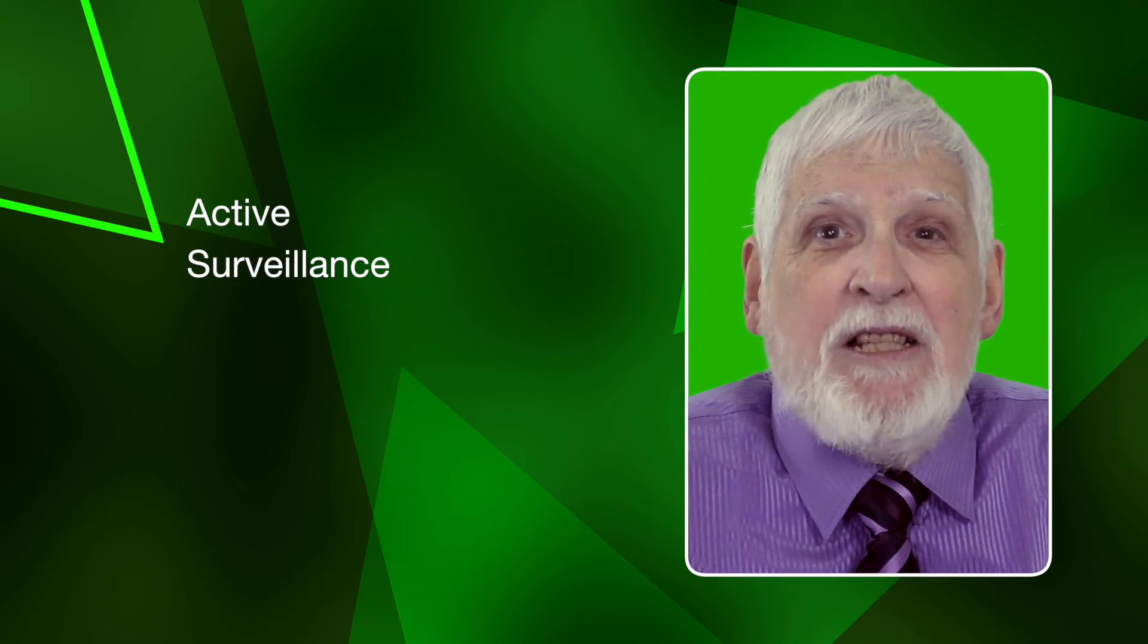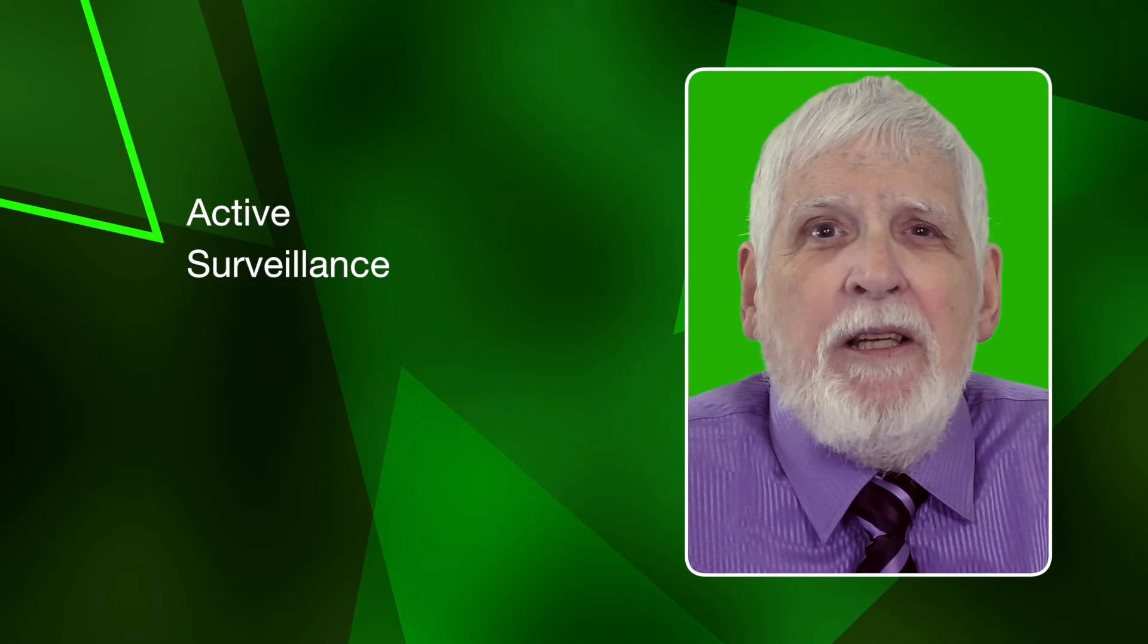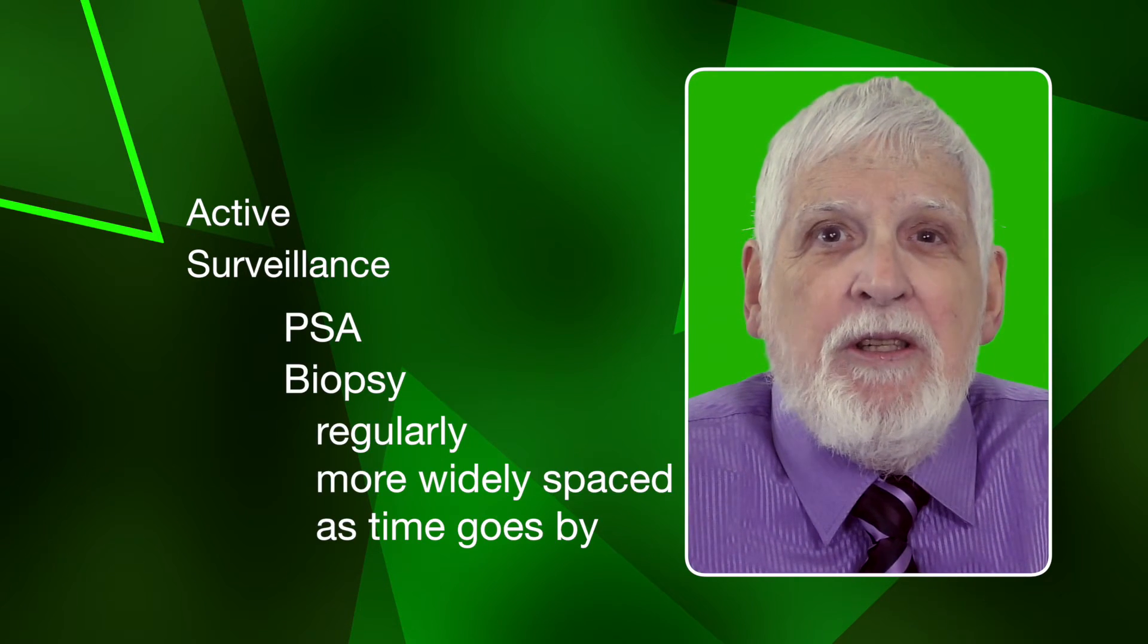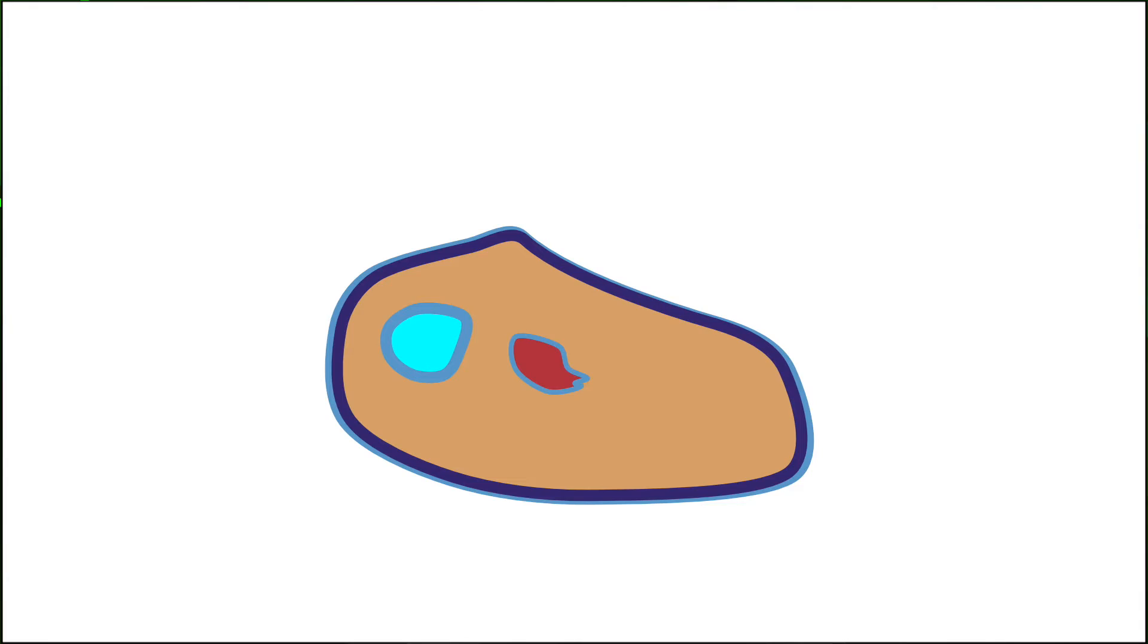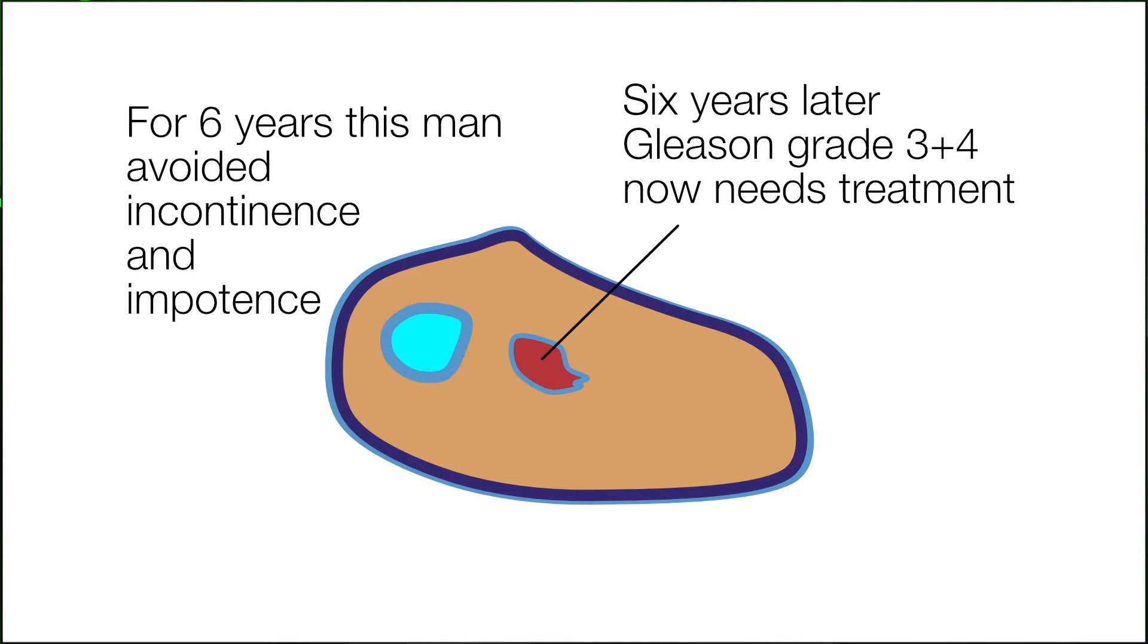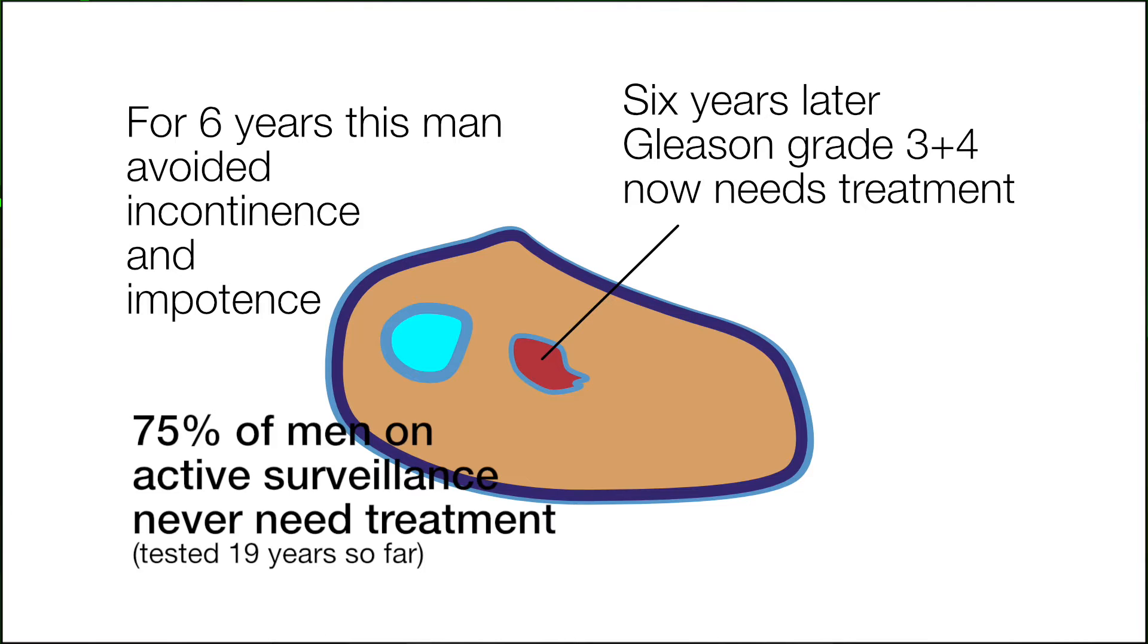Doctors know that a program of carefully watching this man is necessary to make sure he stays safe. This program of active surveillance will typically involve monitoring PSA and periodic needle biopsies. It gives a man the best of both worlds, finding more aggressive cancers before they become a problem while avoiding possible side effects of radical treatment like incontinence or impotence for years, perhaps for life.